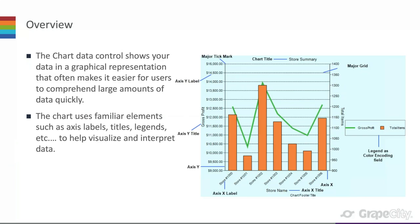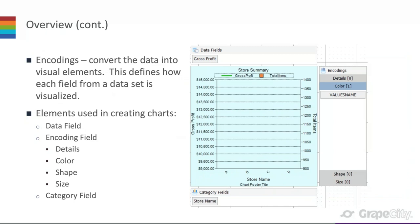The chart data control shows data in a graphical representation, making it easier for users to comprehend large amounts of data quickly. The chart uses familiar elements such as axis labels, titles, and legends to help visualize and interpret data. In this column chart example, you can see the trend of gross profit shown as a green line and the number of items sold per store location shown as orange columns.